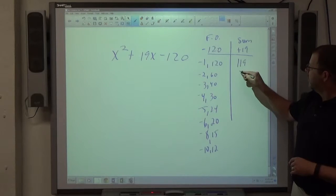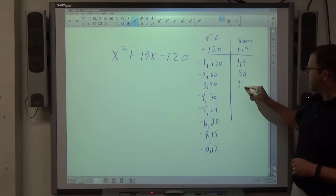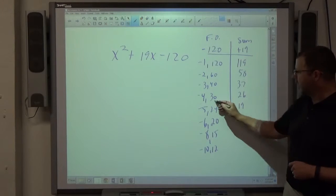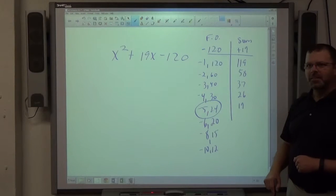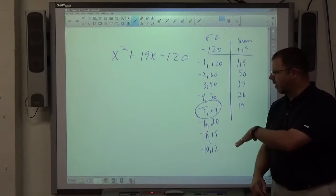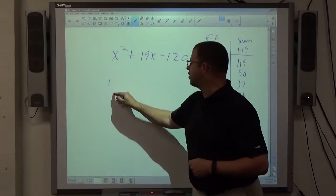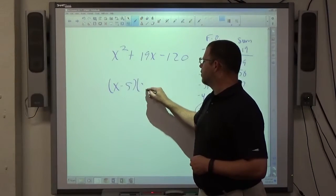1, 19, 58, 37, 26, 19. Hey, look, 19, you're done. You don't even have to continue on. Once you find the right pair, so this is going to be (x - 5)(x + 24).